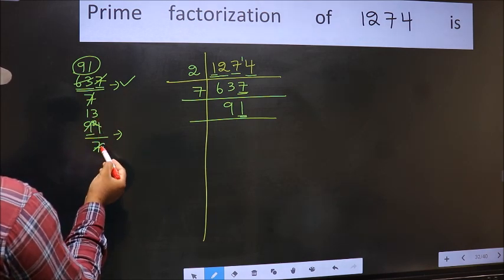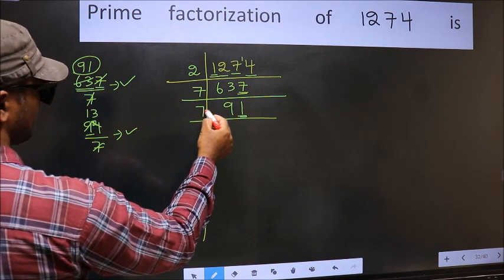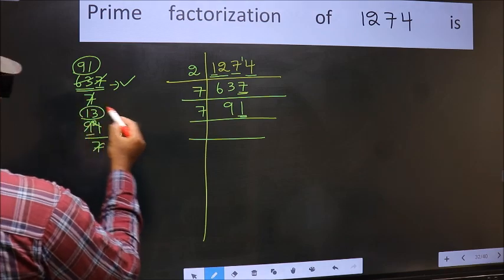No number has been left out. So this is divisible by 7. So take 7 here. And here we write this number: 13.